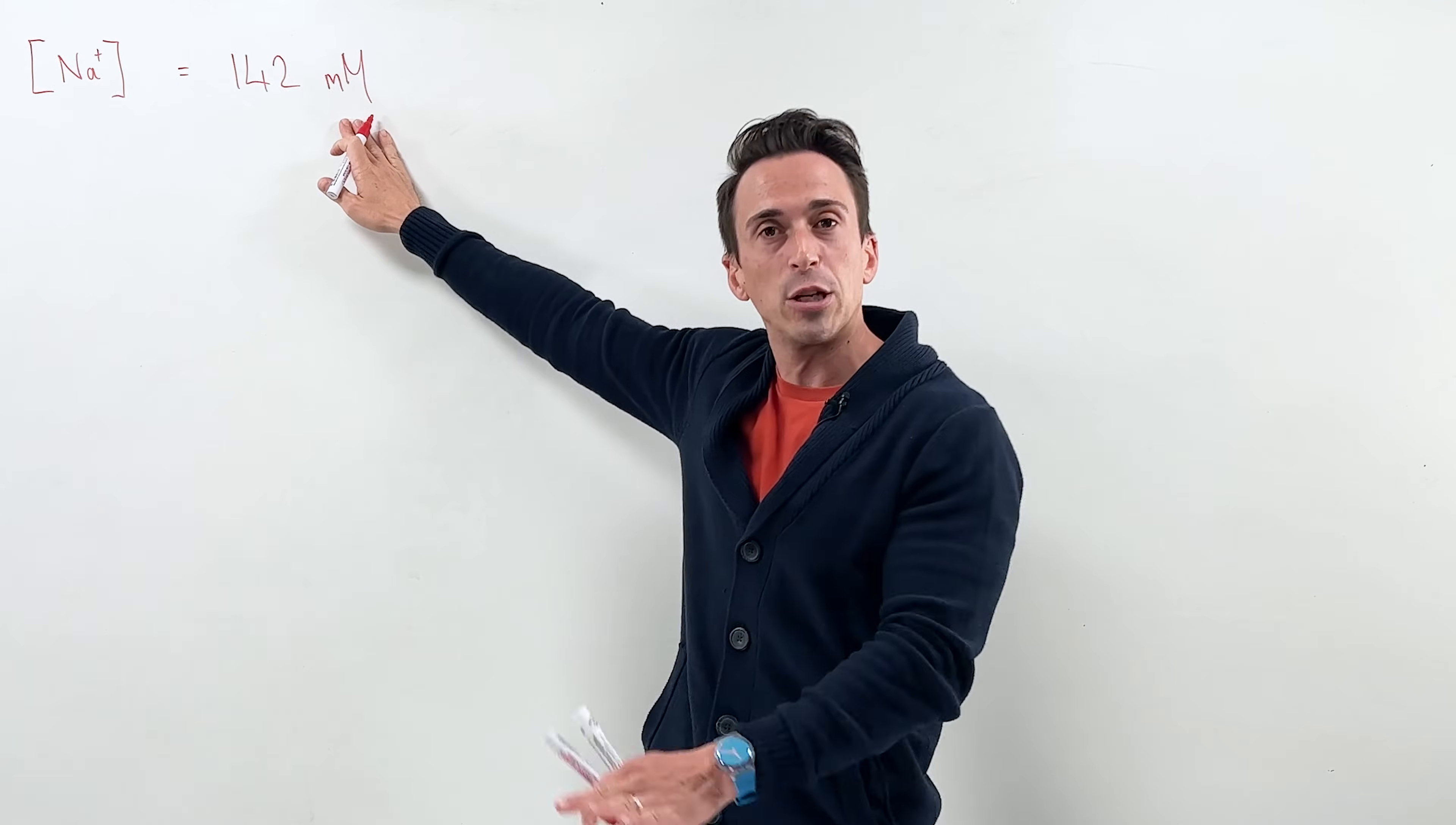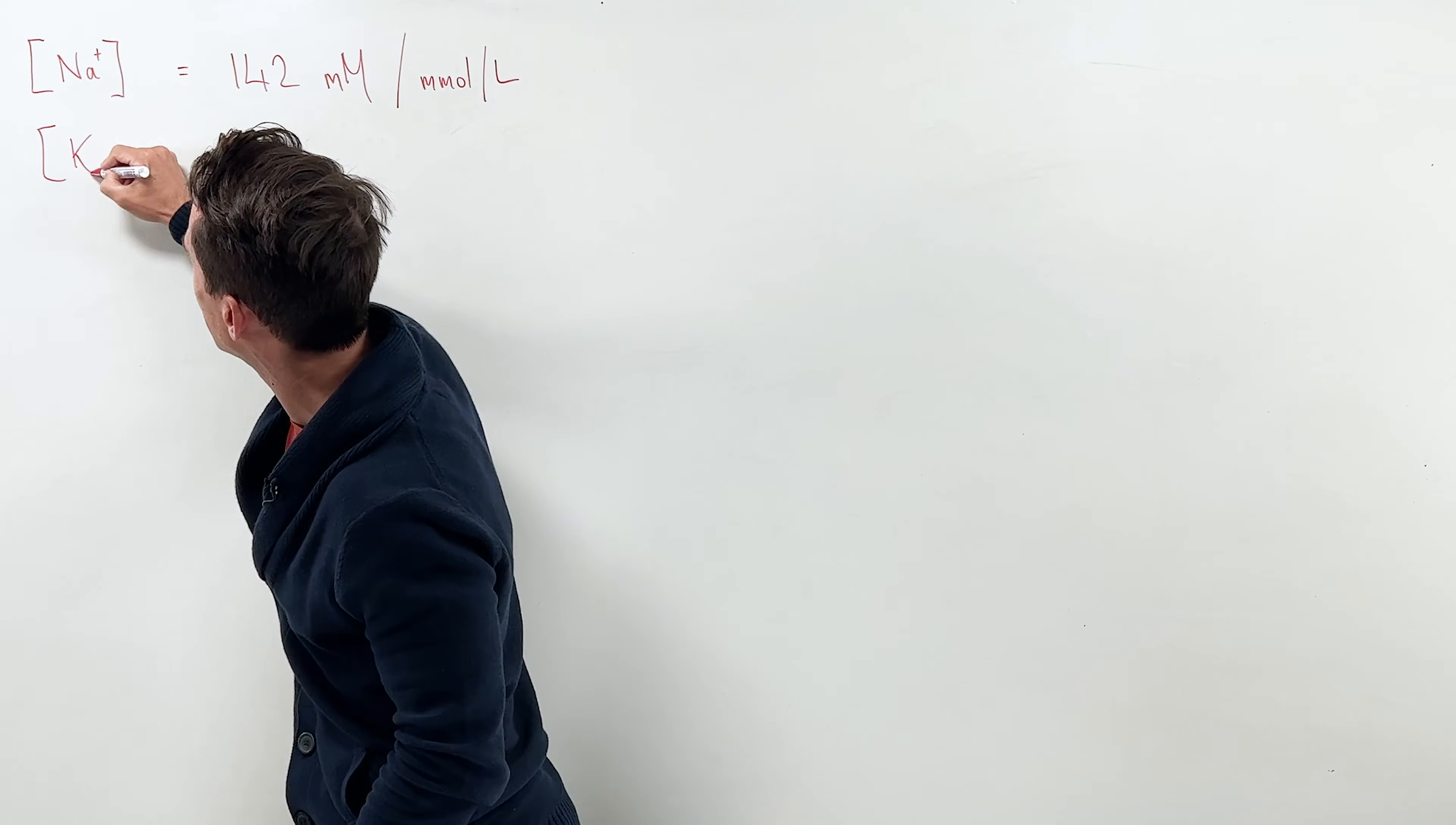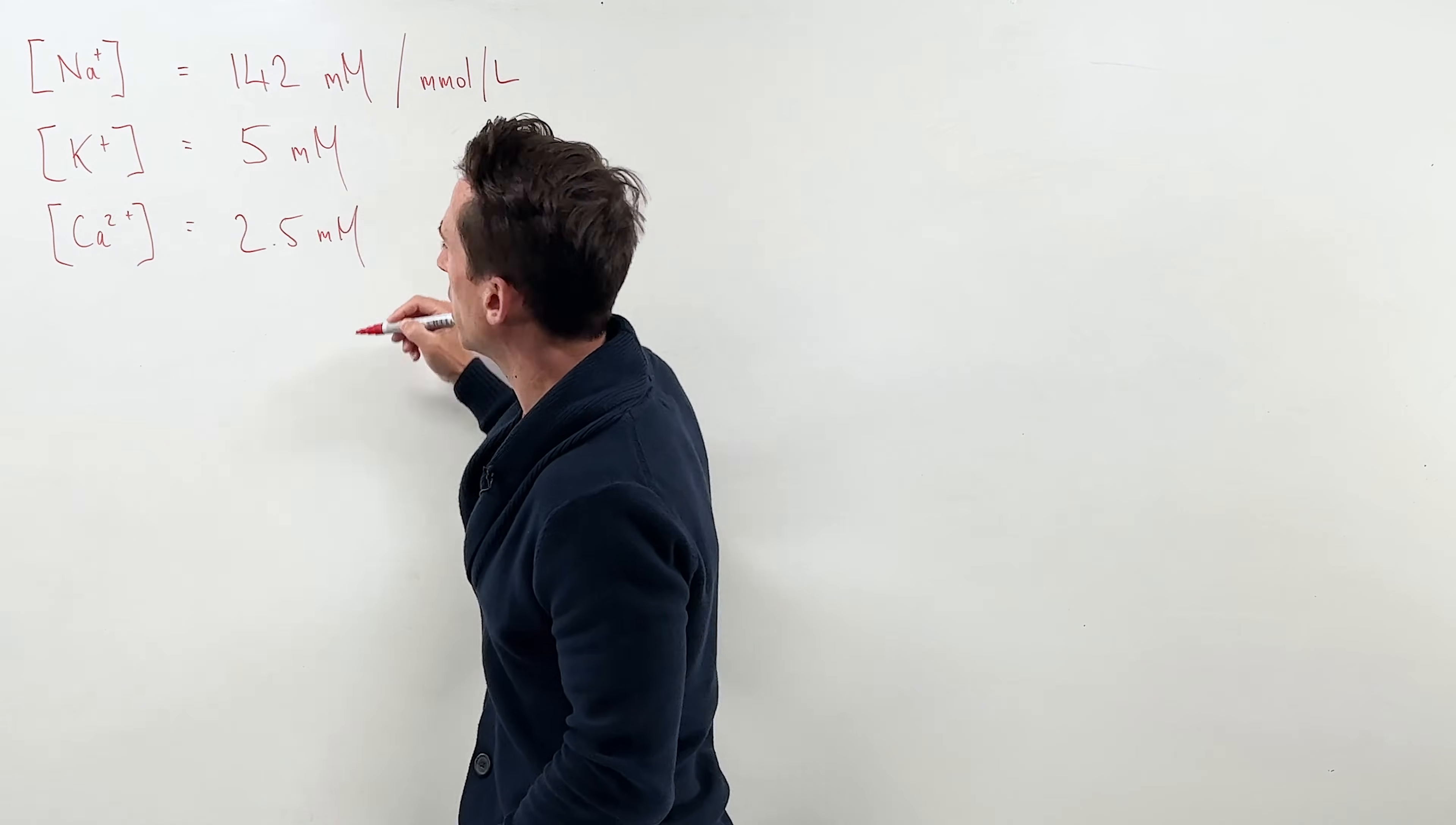Now millimolar is simply the measurement of concentration. You could write it another way - you could say millimoles per litre. That's actually exactly the same as writing millimolar. They're identical, right? So that's the concentration of sodium in your blood. What about the concentration of something like potassium ion in your blood? Well that's going to sit at about 5 millimolar. Again you could write it 5 millimoles per litre. What about something like calcium? You'll find that calcium is going to be around about 2.5 millimolar or millimoles per litre.